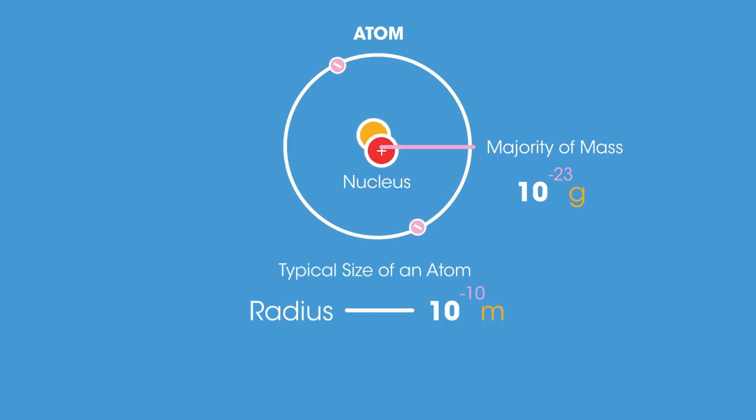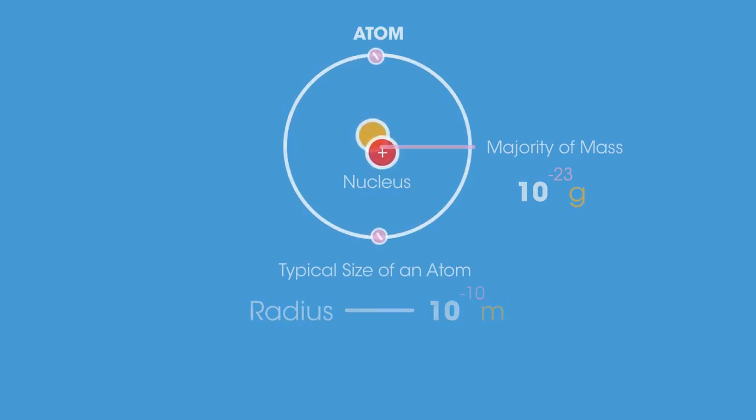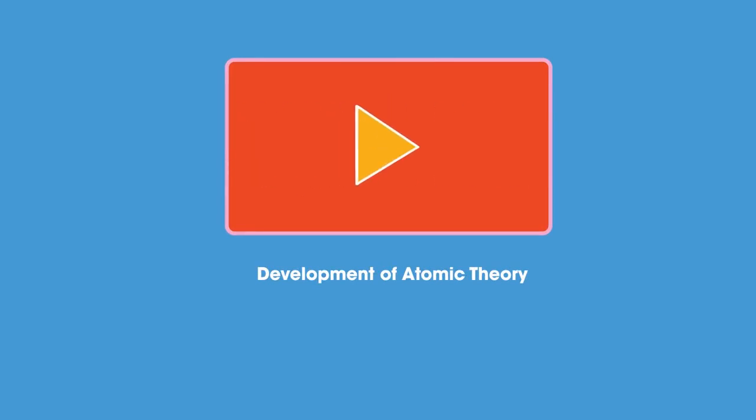The majority of the mass of an atom is found in the nucleus, and the typical size of atoms is 10 to the power of negative 10 meters. To learn about how we discovered the existence of atoms and the structure of atoms, watch this video.